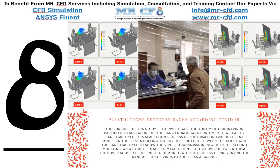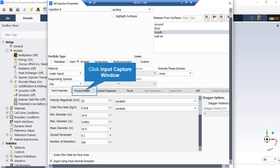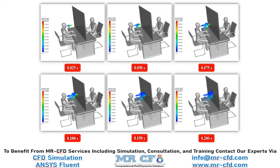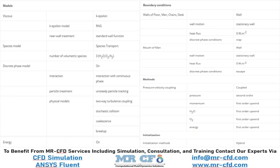In this project, we will simulate the plastic cover effect in banks regarding COVID-19. Make sure that the inject using face normal direction option is selected and enabled. By clicking on the species tab for all wall boundaries, under the species boundary condition, you can see that zero diffusive flux is defined for all species, meaning no species will be generated nor pass through these boundaries. In this slide, you can clearly see the particle tracks at different times and the role of the cover placed between the two people in preventing cough or sneeze droplets from passing through. Finally, a summary of the settings and setup is presented.